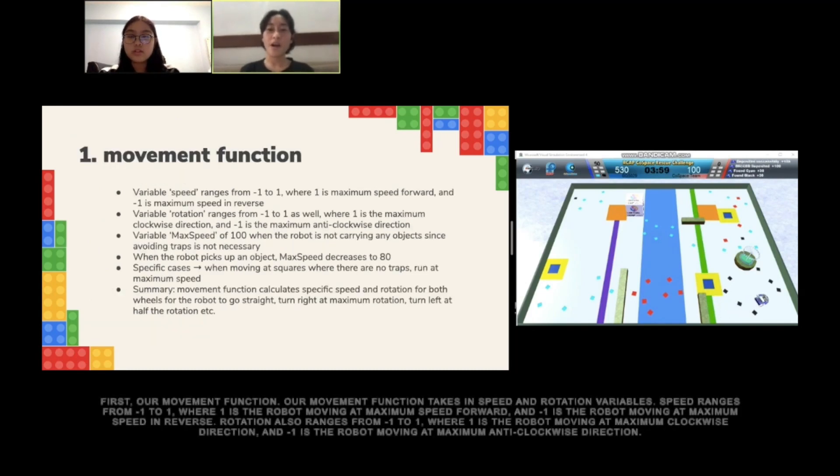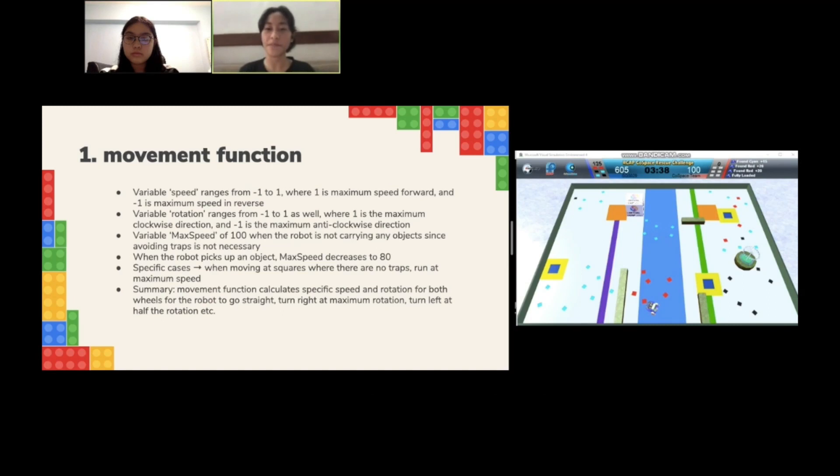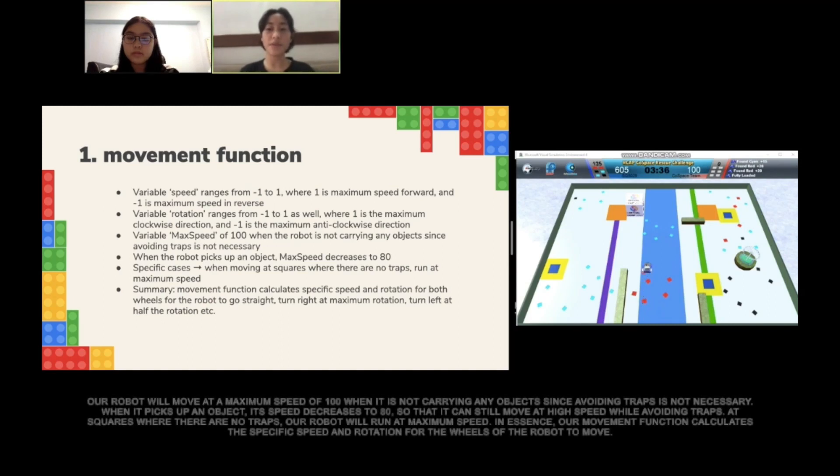First, our movement function. Our movement function is based on speed and rotation variables. Speed ranges from minus 1 to 1 where 1 is the robot moving at maximum speed forwards and minus 1 is the robot moving at maximum speed backwards. Rotation also ranges from minus 1 to 1 where 1 is the robot rotating at maximum clockwise direction and minus 1 is maximum counter-clockwise direction. Our robot will move at a maximum speed of 100 when it is not carrying objects since avoiding traps is not necessary. When it picks up an object, its speed decreases to 80 so that it can still move at high speed while avoiding traps.